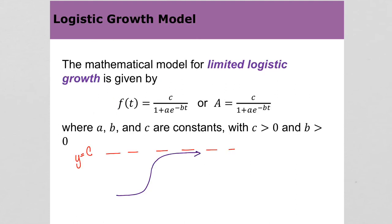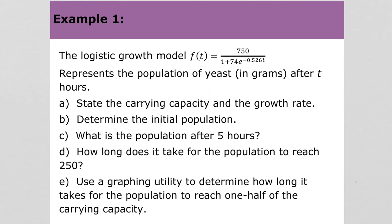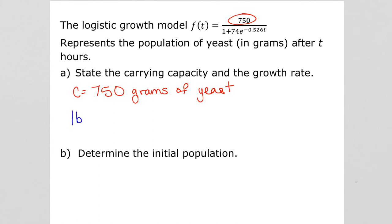What is the growth rate? The growth rate is b. Just like it was k where we did e to the kt, b is still your growth rate. It would be the absolute value of b, so the absolute value of b is 0.526. That is the rate, and rates are usually measured in percents, so this means 52.6% growth per hour.